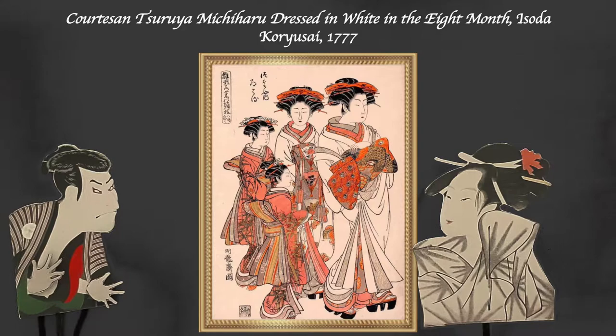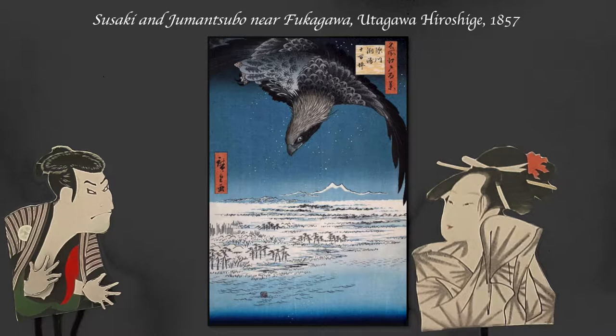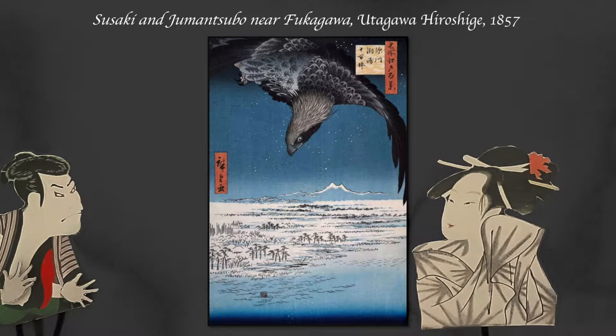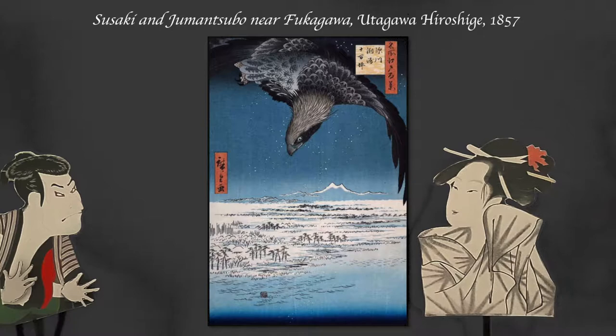I recognize this artist! It's Hiroshige and his series of 100 views of famous places in Edo. This piece also shows a new coloring development. By dampening the paper before applying the ink, artists became able to manipulate the layering, blending, and transparency of colors.